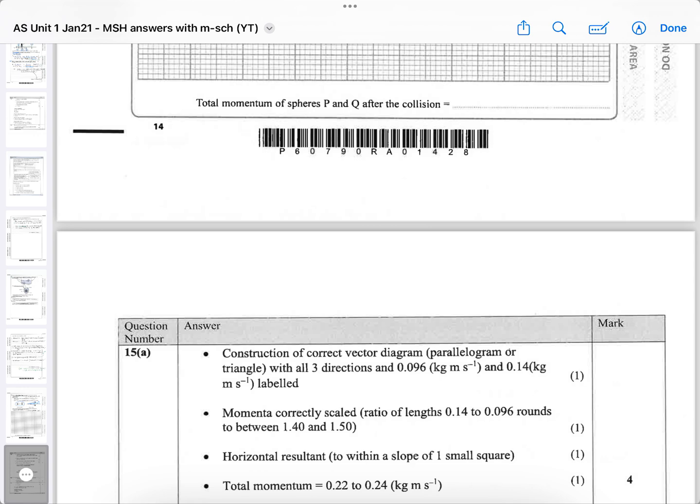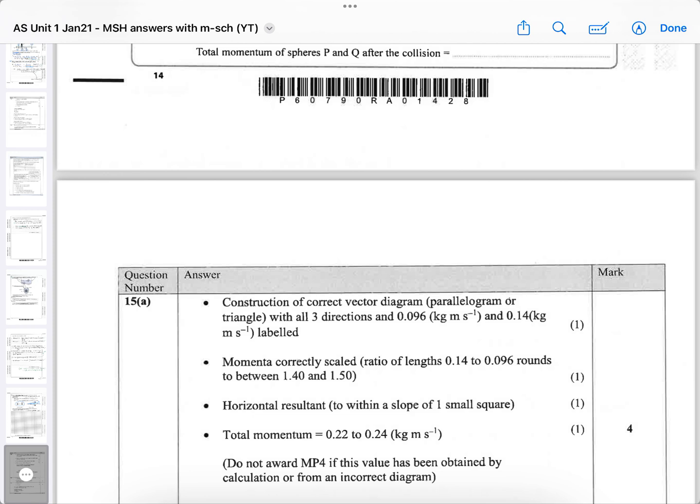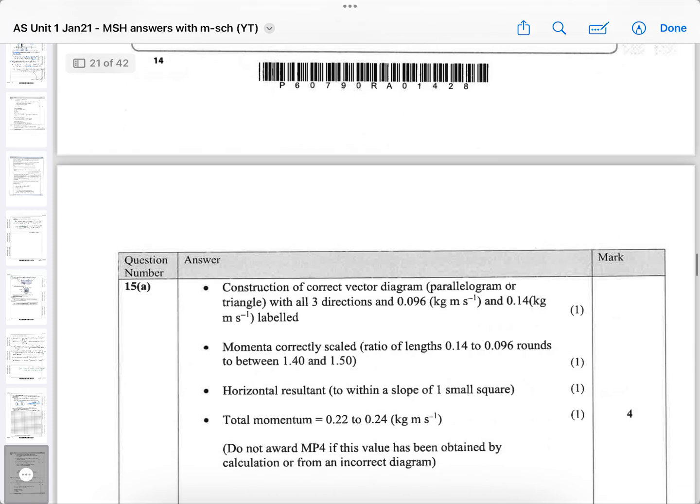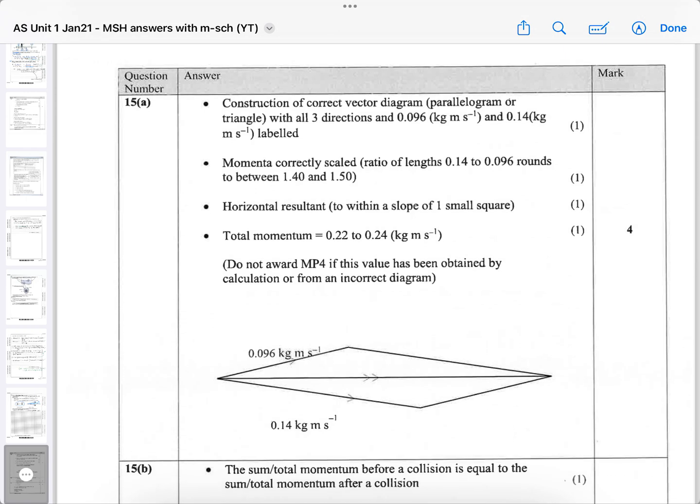That means your scale hasn't been drawn exactly right or you haven't measured the angles accurately or something along those lines. So they're checking the accuracy of your scale drawing. And then the total momentum of the resultant line should be about 0.22 to 0.24 in kilograms meters per second on the scale that you've shown. So it's basically can you draw a parallelogram or a rectangle or a triangle accurately with the scales, the numbers they're giving you? And they're deliberately giving you 0.096 and 0.14 to make it not easy, makes you think mathematically carefully. And it says do not award the fourth mark if the student has done it by calculation rather than from an accurate scale drawing.